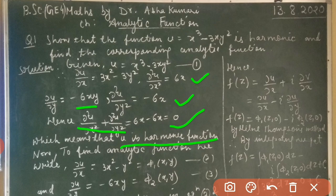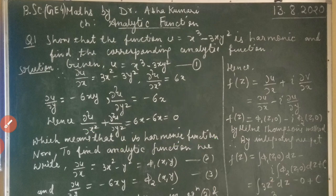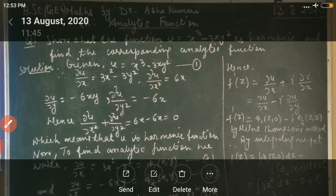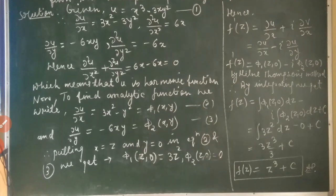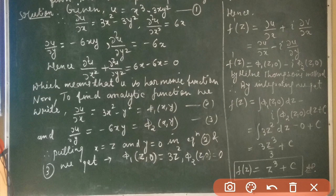Now we have to find the corresponding analytic function. We write ∂u/∂x = 3x² - 3y² and let this be φ₁(x, y) — equation (2). We also write ∂u/∂y = -6xy and let this be φ₂(x, y) — equation (3).